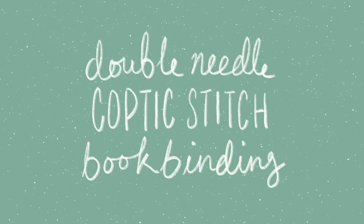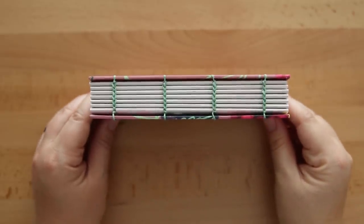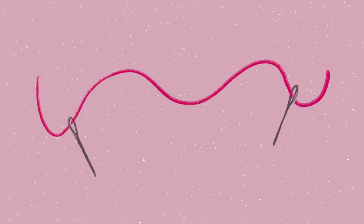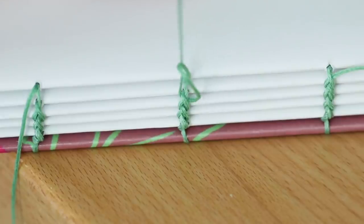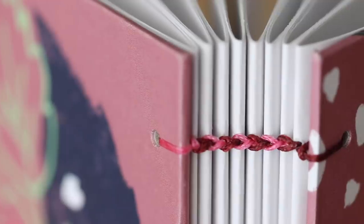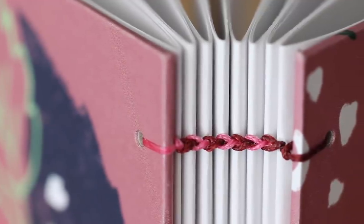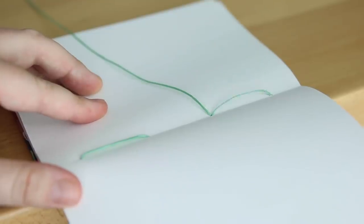Hello, it's Jennifer from Sea Lemon. In this video I will show you how to make a double needle coptic stitch book binding. This differs from a usual coptic stitch by using two needles, one on each end of your thread, and alternating them while you bind, which can form a more uniform braided look to your stitches. You can also bind with two colors of thread on this one.